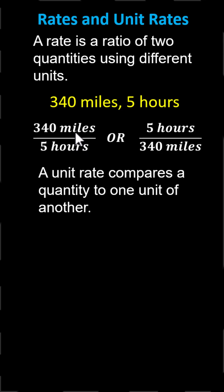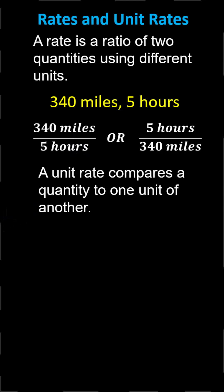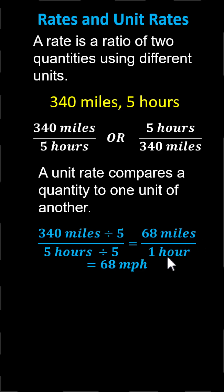Starting with 340 miles per 5 hours, to form the unit rate we divide both 340 and 5 by 5. Notice 5 hours divided by 5 is equal to 1 hour, and 340 miles divided by 5 equals 68 miles. The unit rate is 68 miles per 1 hour, which you can also write as 68 miles per hour.